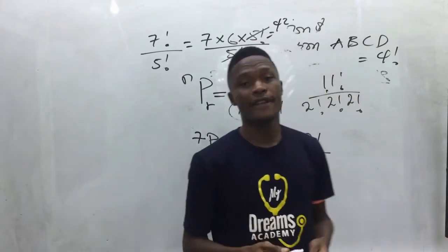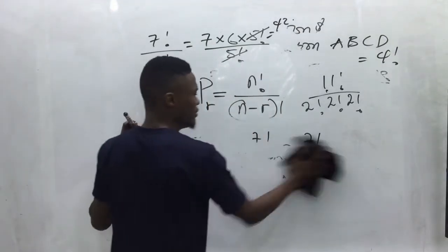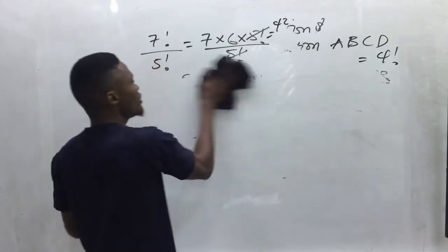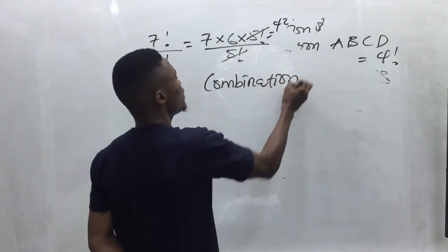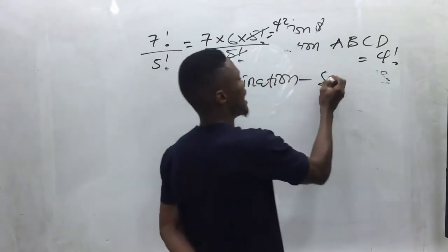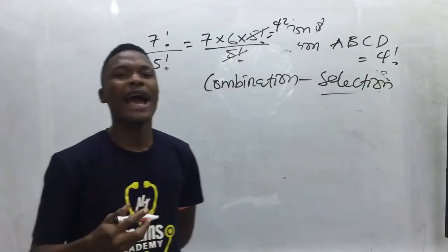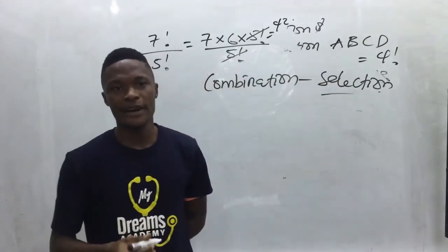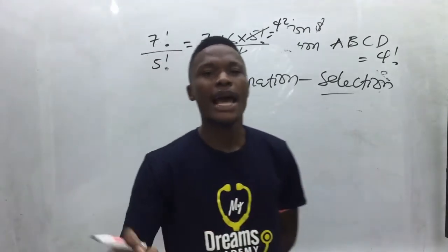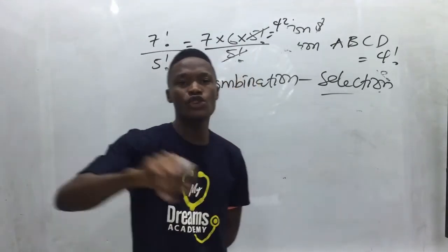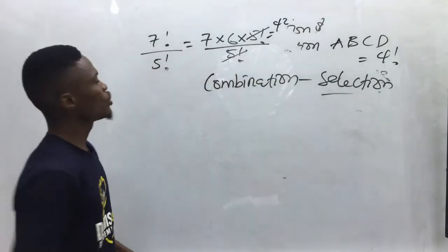Now let's look at combination. The keyword for combination is selection. We are no longer arranging — we are selecting. In combination, you just choose the items. In permutation, after choosing you also arrange. These two things are entirely different.